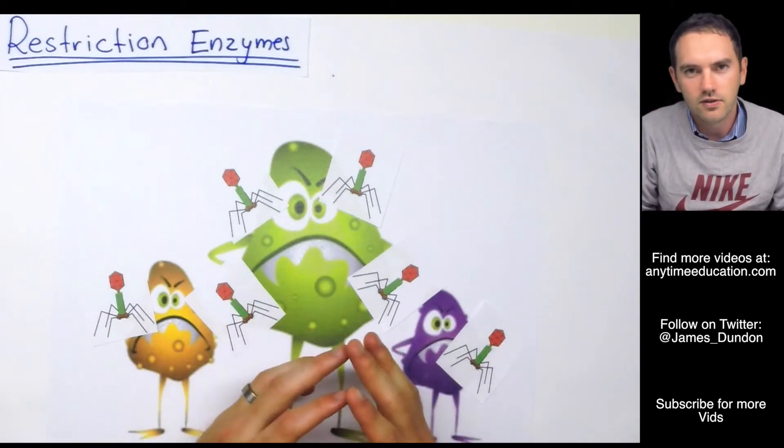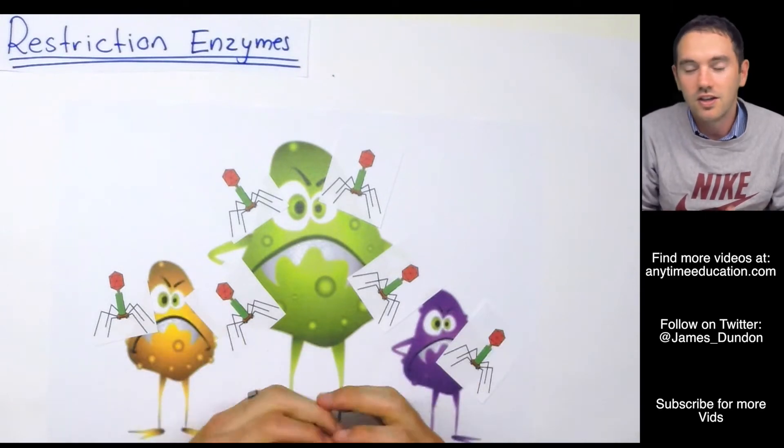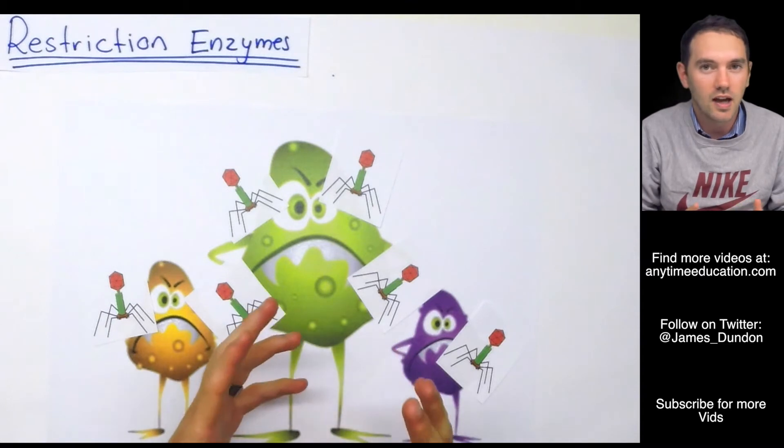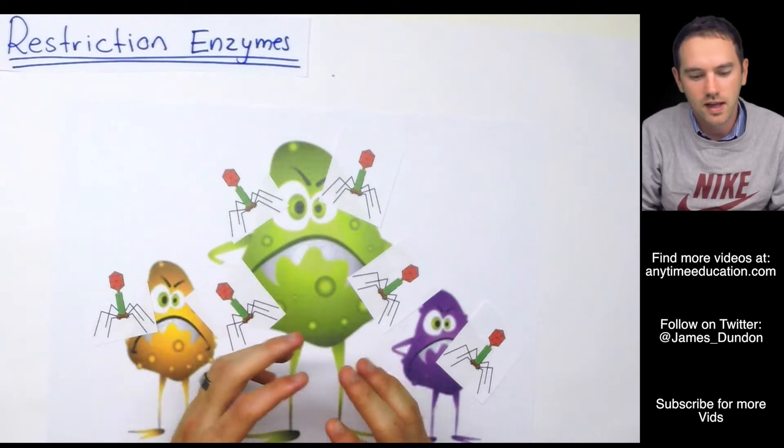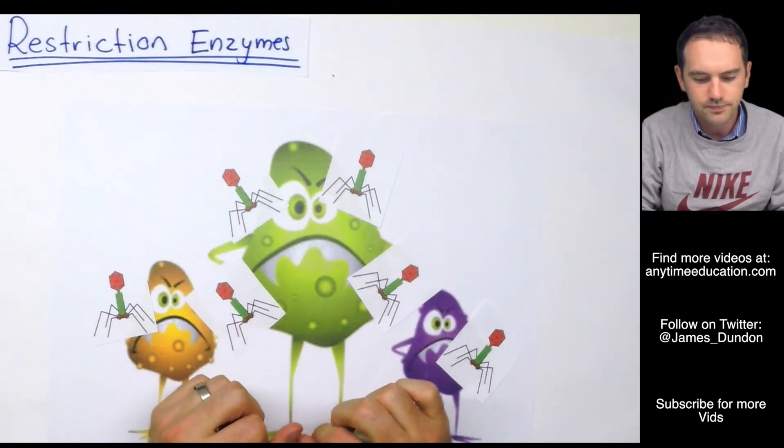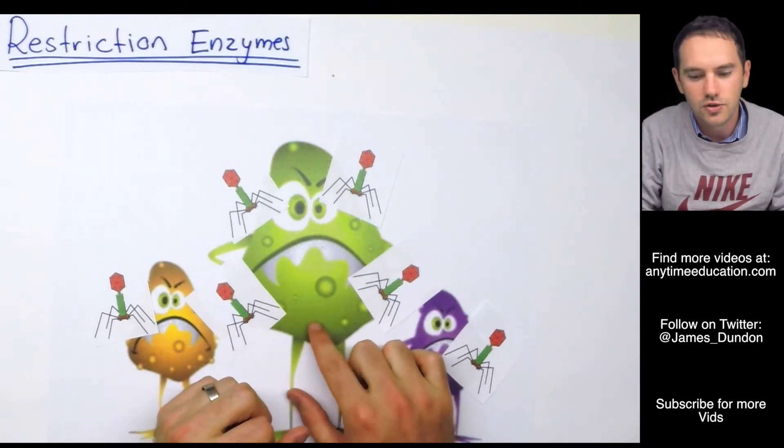Now if you're a bacterial cell, you don't have much in the way of defenses, do you? You're not like a person where you've got an immune system, where you've got active white blood cells that go and target these pathogens and kill them. Bacterial cells don't have them. So they've developed quite an unusual defense.